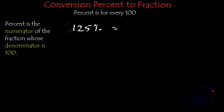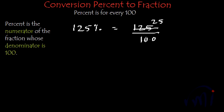So the percentage is the numerator of a fraction whose denominator is 100. Simplifying: 5 × 2 = 10, 5 × 5 = 25, 5 × 2 = 10, 5 × 5 = 25, 5 × 4 = 20. This gives us nothing but 5 by 4.